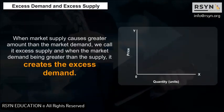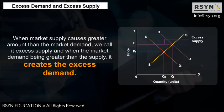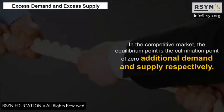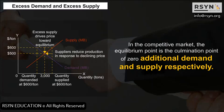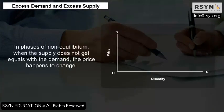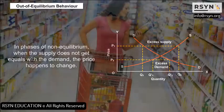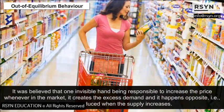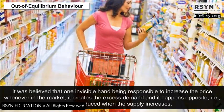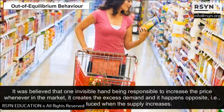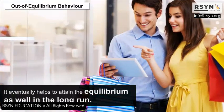Excess demand and excess supply: When market supply is greater than market demand, we call it excess supply. When market demand is greater than supply, it creates excess demand. In the competitive market, the equilibrium point is the culmination of zero additional demand and supply. In phases of non-equilibrium, when supply does not equal demand, the price changes. It was believed that one invisible hand is responsible for increasing the price whenever excess demand occurs, and the price is reduced when supply increases, helping attain equilibrium in the long run.